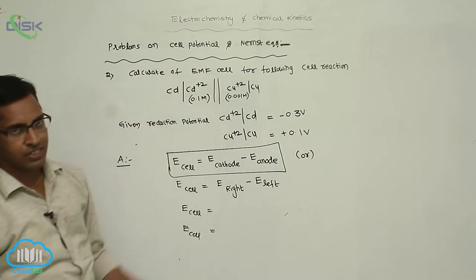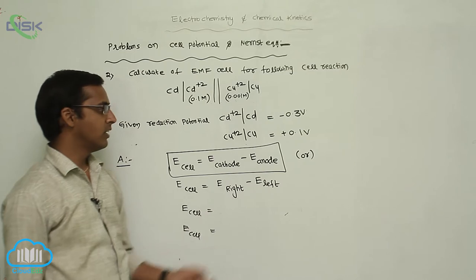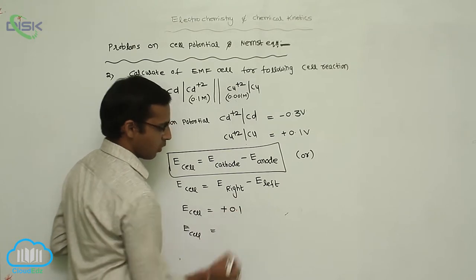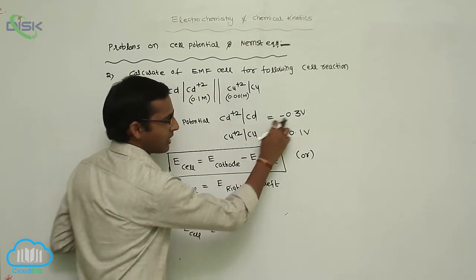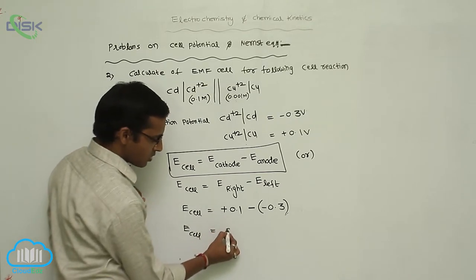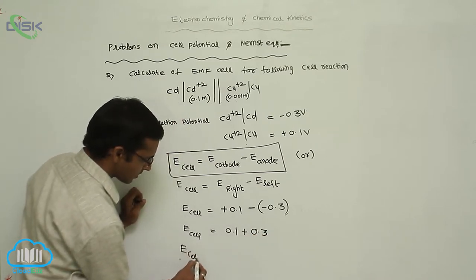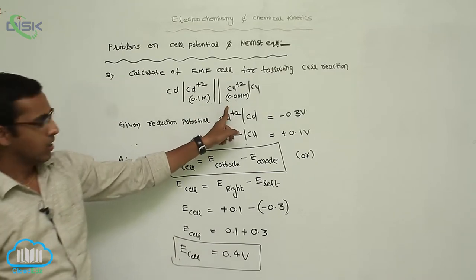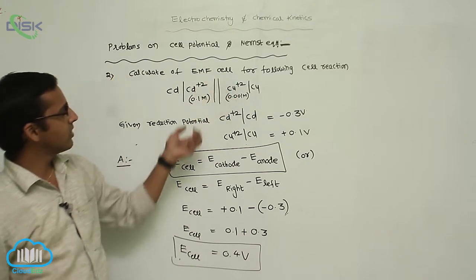We calculate the cell potential using the same equation: E_cell equals E_cathode minus E_anode, or E_right minus E_left. E_cathode is plus 0.1 volt, minus E_left which is the oxidation value of minus 0.3 volt. Minus of minus 0.3 gives plus 0.3. So 0.1 plus 0.3 equals 0.4 volt. This is the final answer for the cell reaction. The first was the Daniel cell; this is another simple cell reaction.